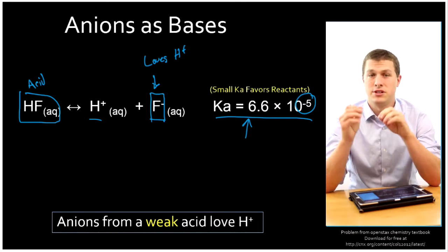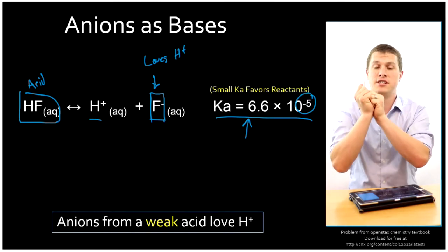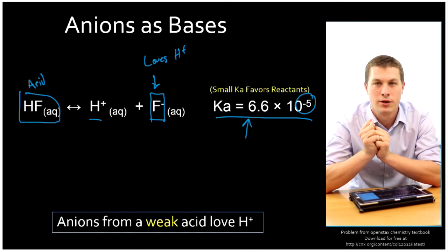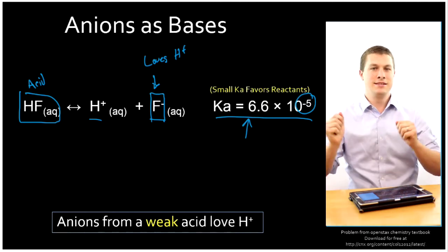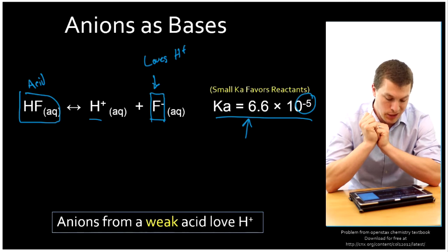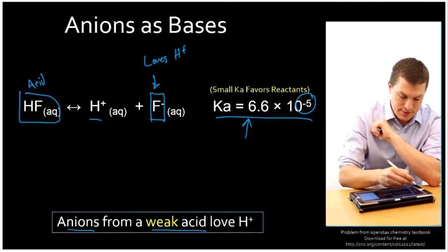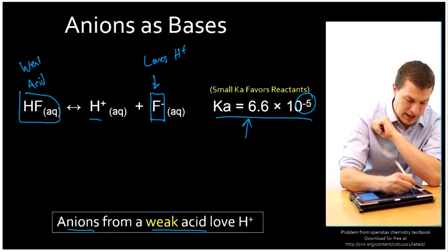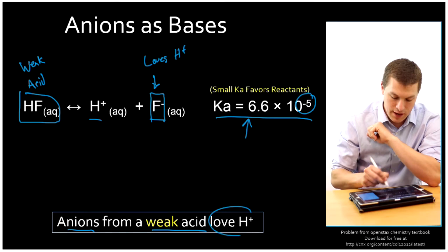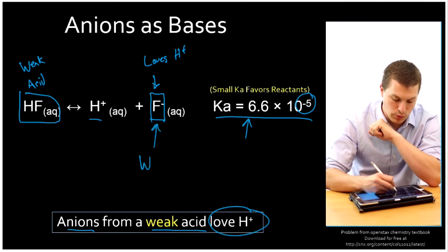So if fluoride loves hydrogen, if I just put fluoride itself into a solution, it's going to roam around until it finds a hydrogen, and it's going to get together and it's not going to split apart. So fluorine really wants to be in a relationship. And that means, since it wants to grab onto that hydrogen ion, it acts like a base. So anions from a weak acid, such as HF, which we know is weak because of its small Ka, love hydrogen plus. And that means that our fluoride acts as a weak base.